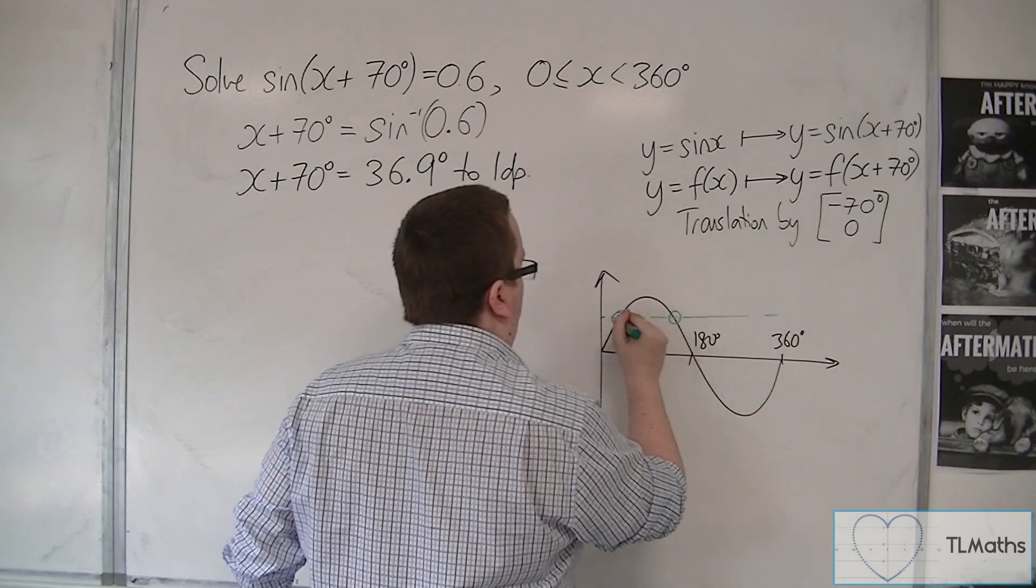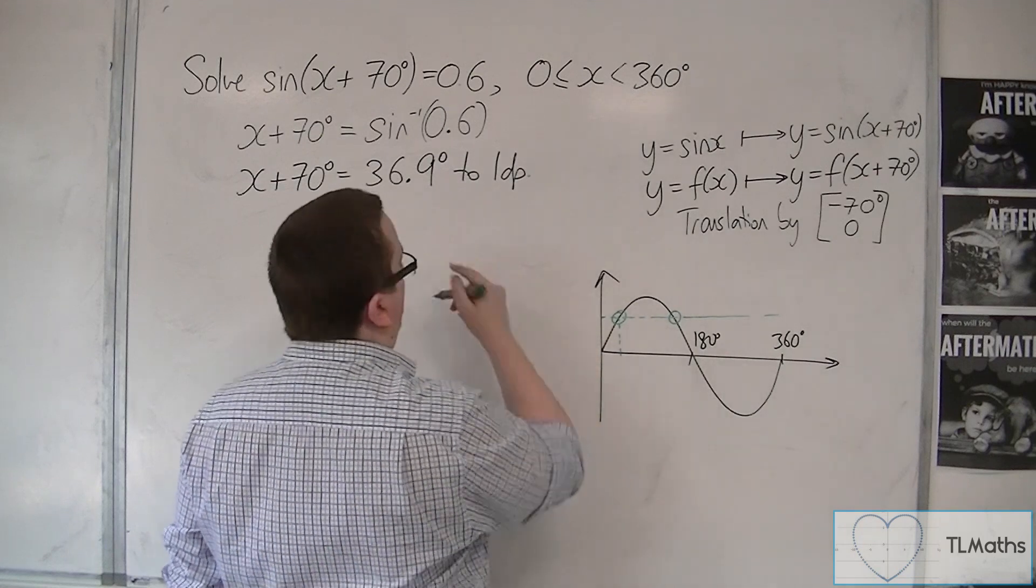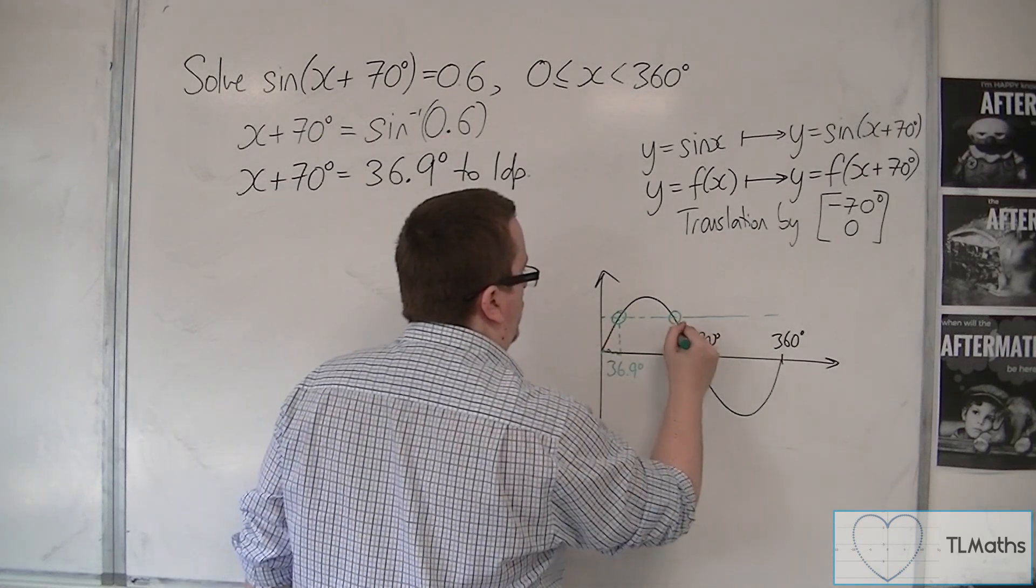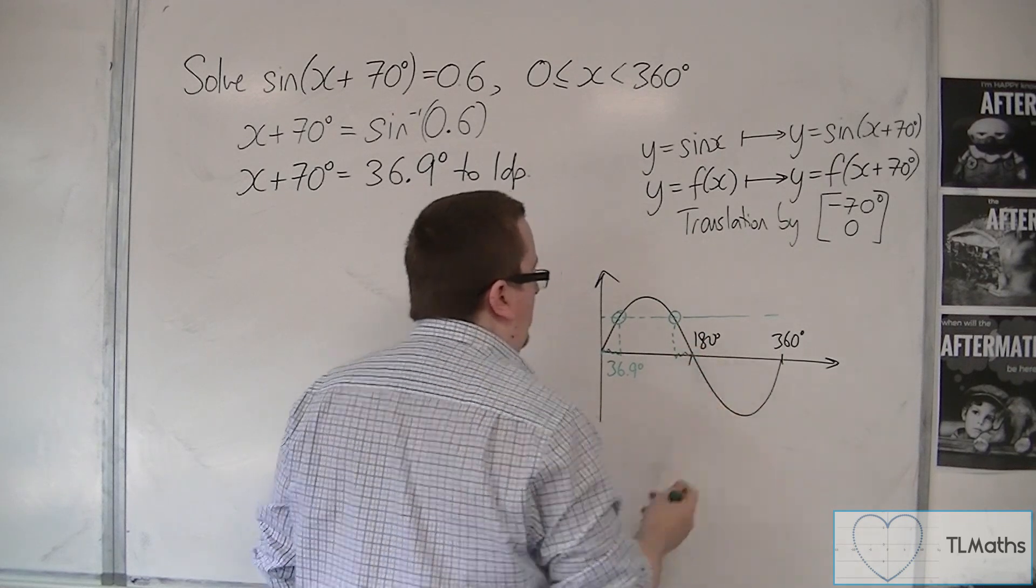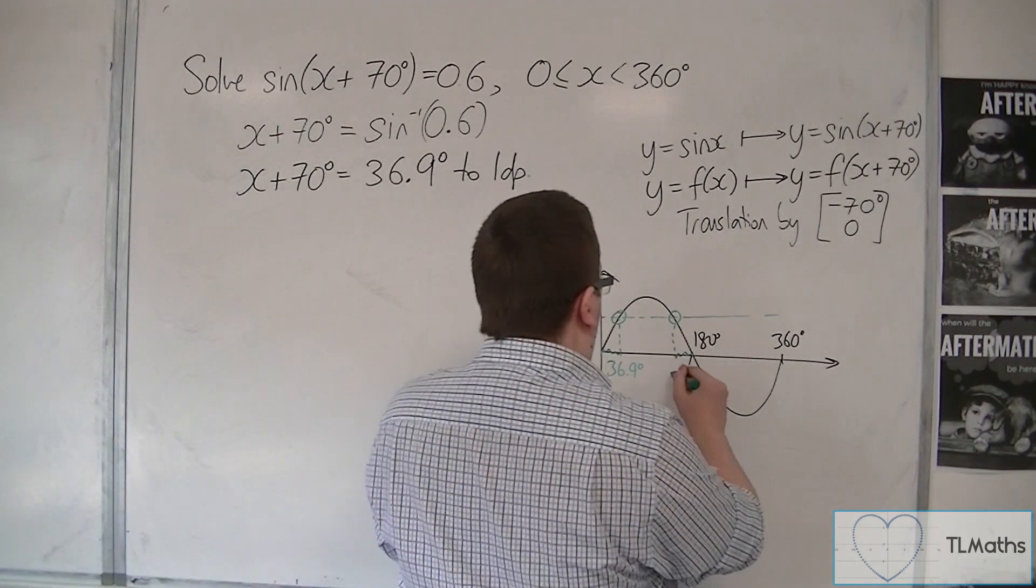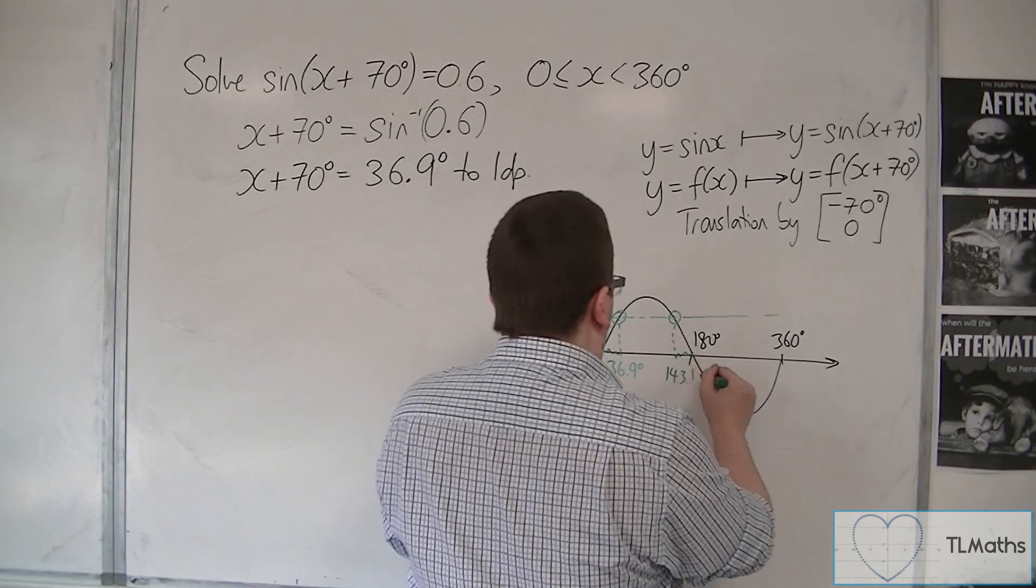So, 0.6 is about there. There is my first solution. So, that's the 36.9. And I can get the second solution by subtracting 36.9 from 180. So, 180 take away the answer is 143.1.